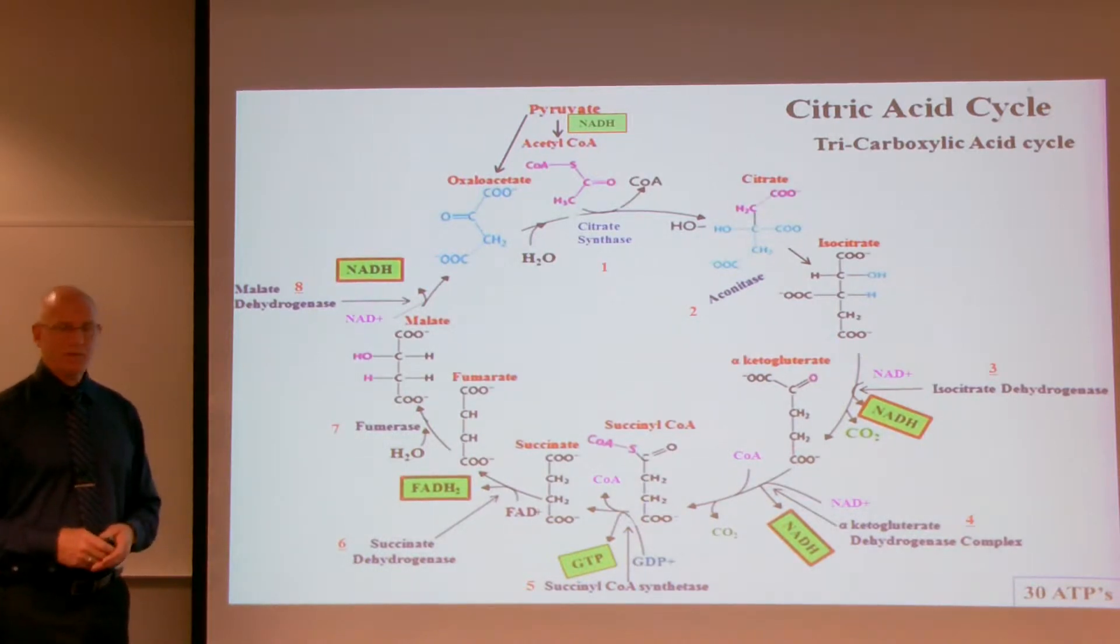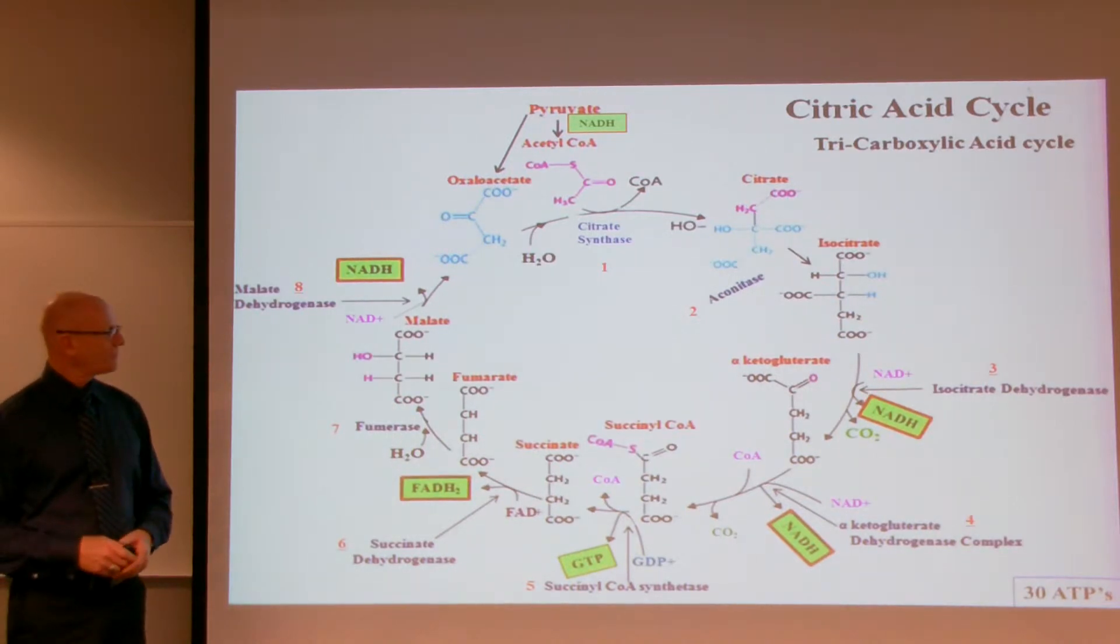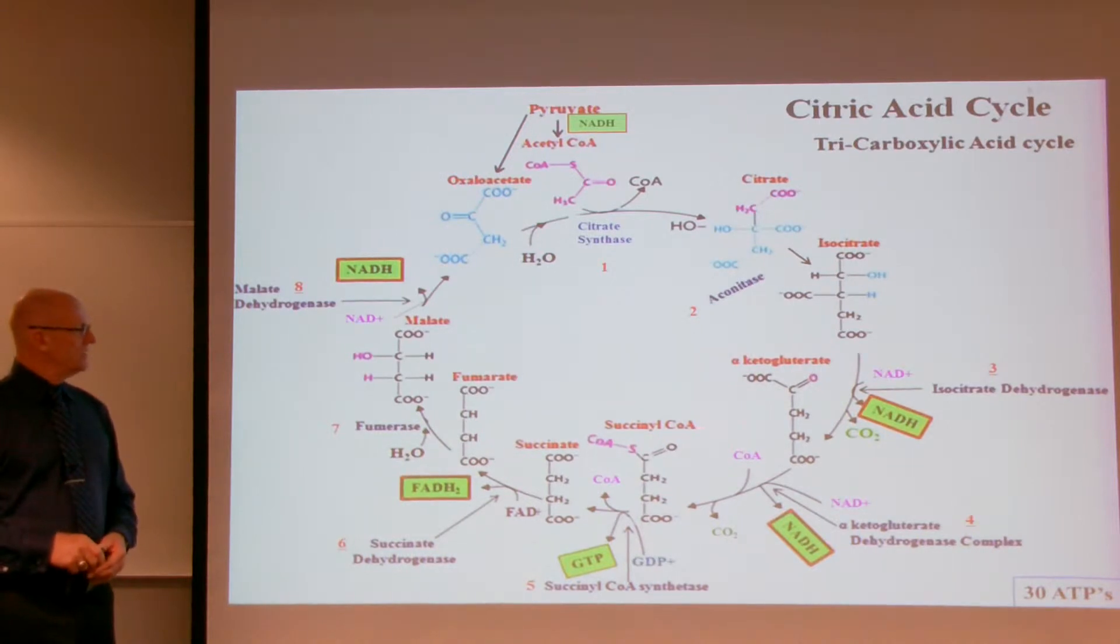Now in the fourth step, it is another dehydrogenation and another decarboxylation. Alpha-ketoglutarate dehydrogenase complex will decarboxylate, it will take off another carboxyl unit coming out as carbon dioxide, and it will take off a couple of hydrogens through the process of the oxidized form of NAD, converting it to NADH. Then, that will yield succinyl-CoA.